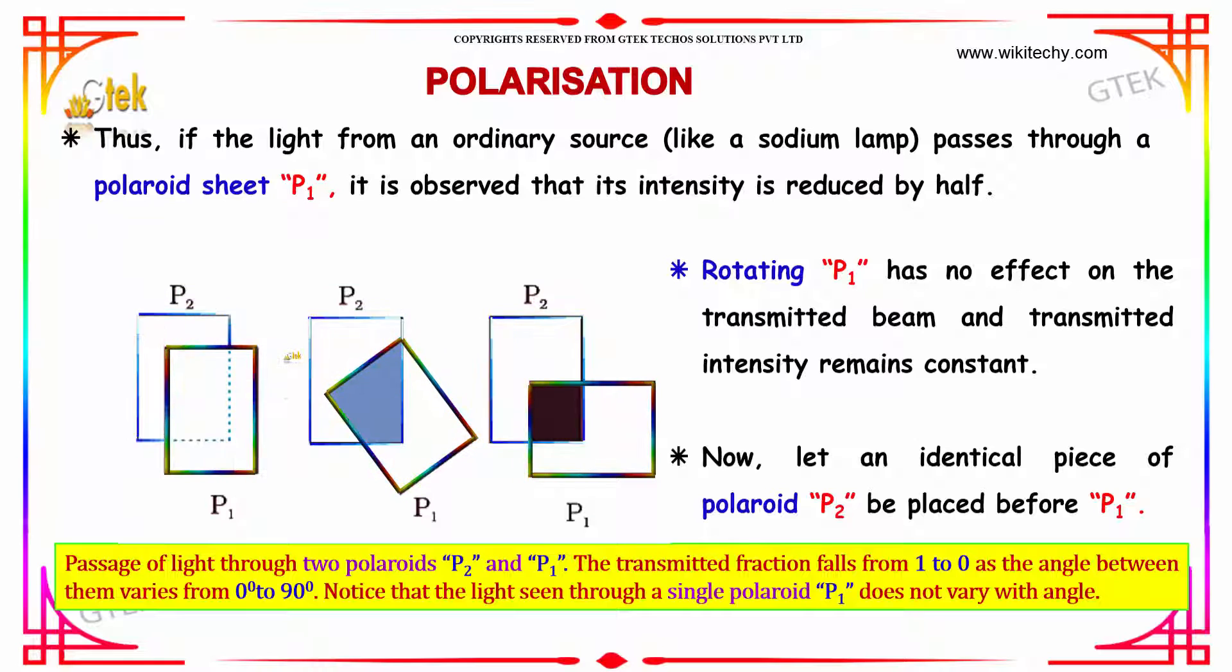The transmission fraction falls from 1 to 0 as the angle between them varies from 0 to 90 degrees. Notice that the light seen through a single polaroid P1 does not vary with angle.